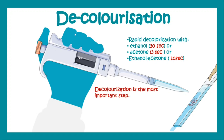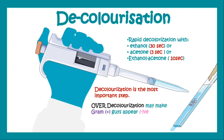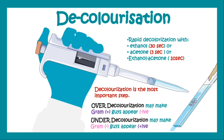Decolorization is the most important step of gram staining. If you do over-decolorization then even a gram-positive organism may appear gram-negative, and if you do under-decolorization then a gram-negative organism may appear gram-positive, which can lead to false diagnosis. So decolorization should be performed with utmost care and concentration.